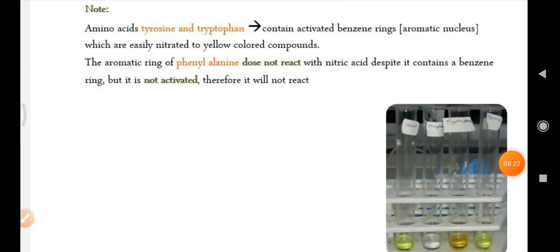Why? Because amino acids, tyrosine and tryptophan contain activated benzene rings. These activated benzene rings are aromatic nucleus which are easily nitrated to yellow colored compound.